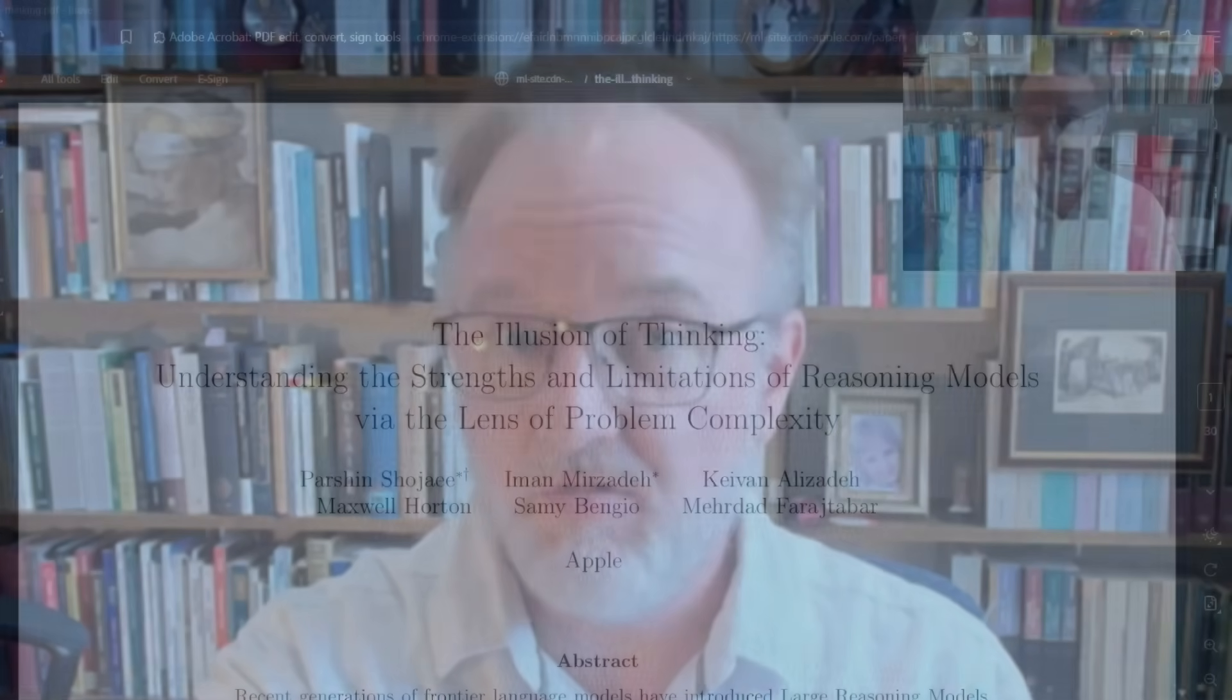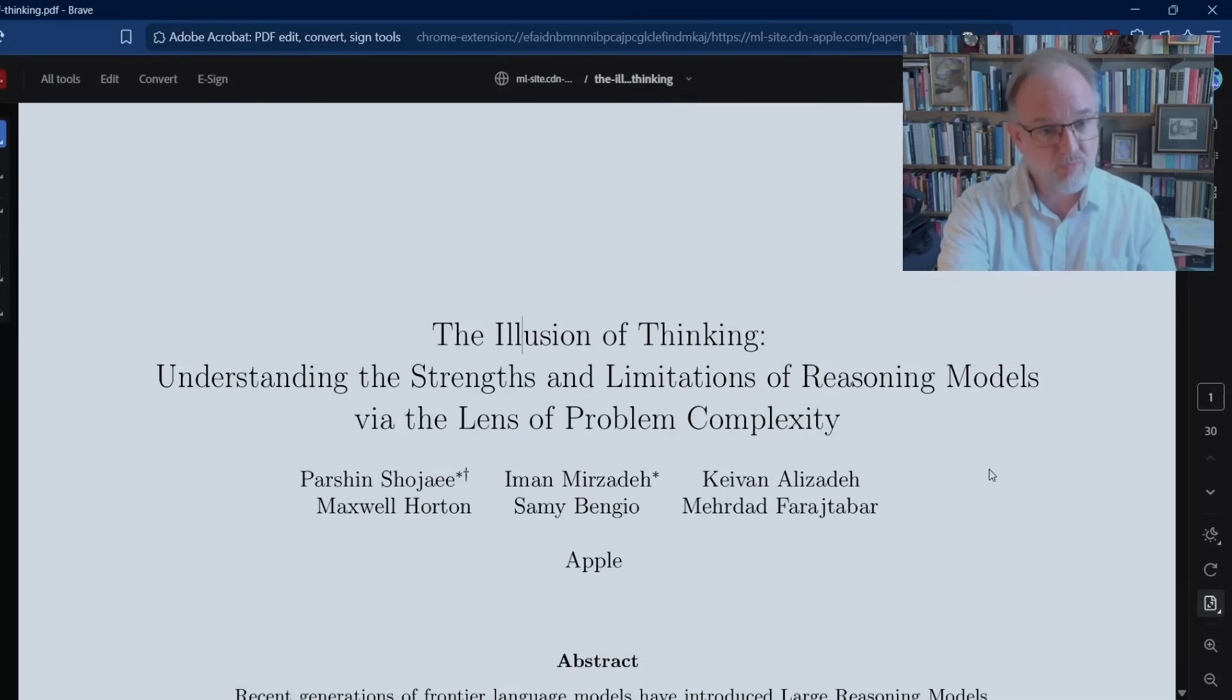My field is not computer science or LLMs, but I want to share with you the paper, and I'll give you a link in the description below. Here it is: The Illusion of Thinking, Understanding the Strengths and Limitations of Reasoning Models via the Lens of Problem Complexity by these six authors at Apple. I'm just going to share with you part of the paper. There's no date on this document, but I am told that it was published on June 5th, 2025.